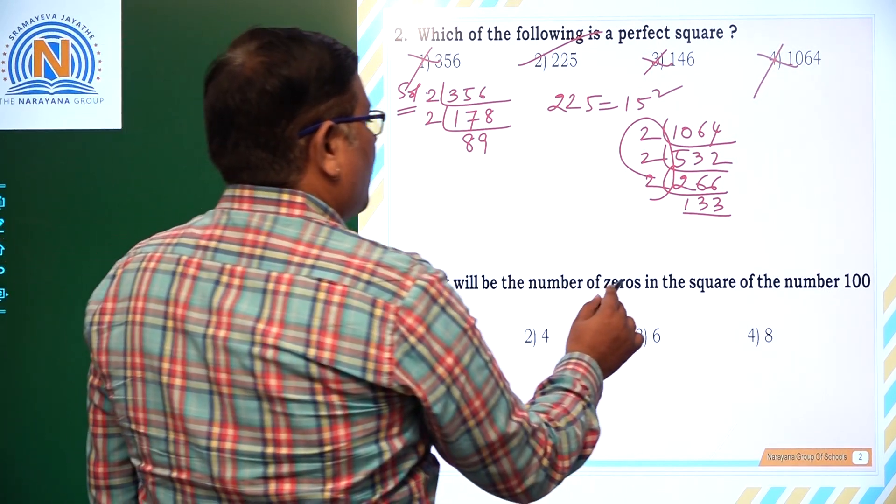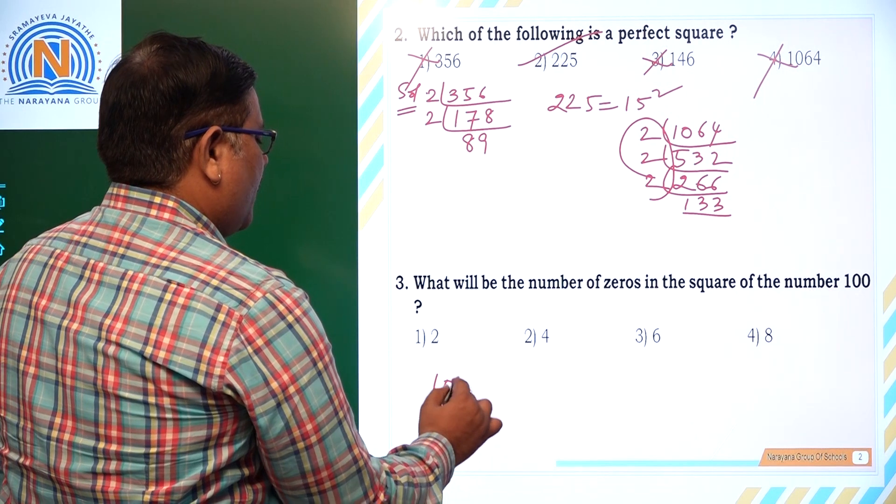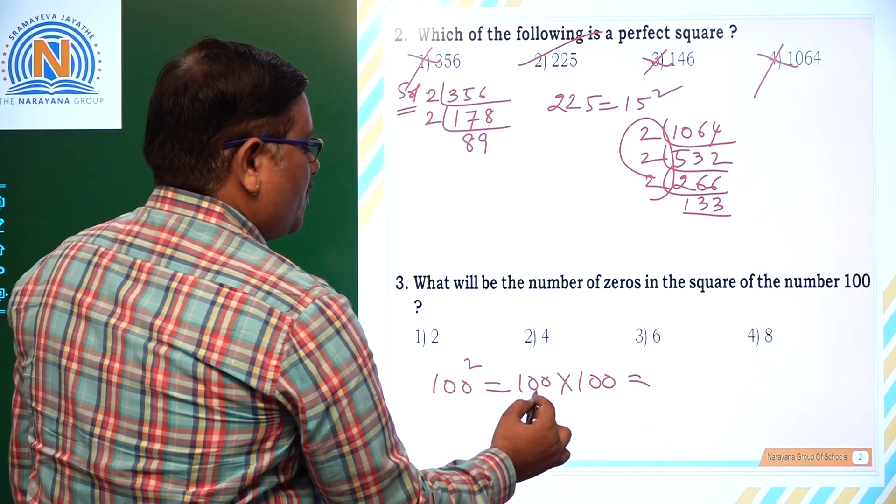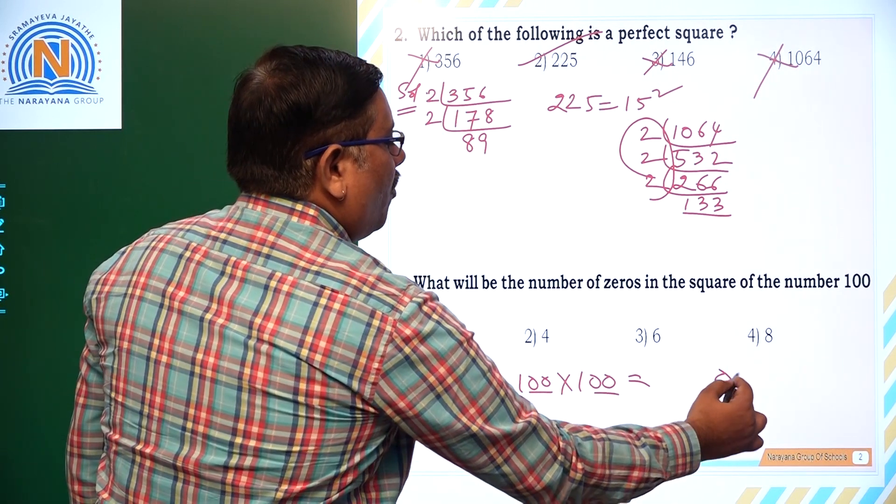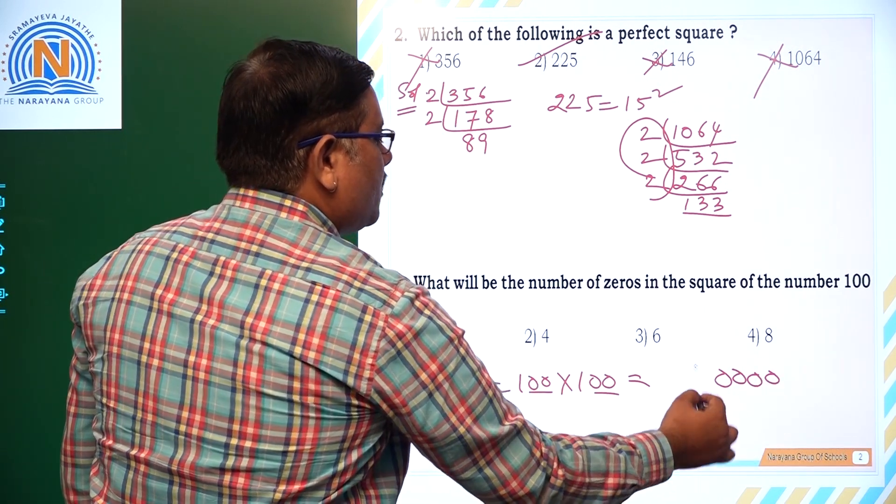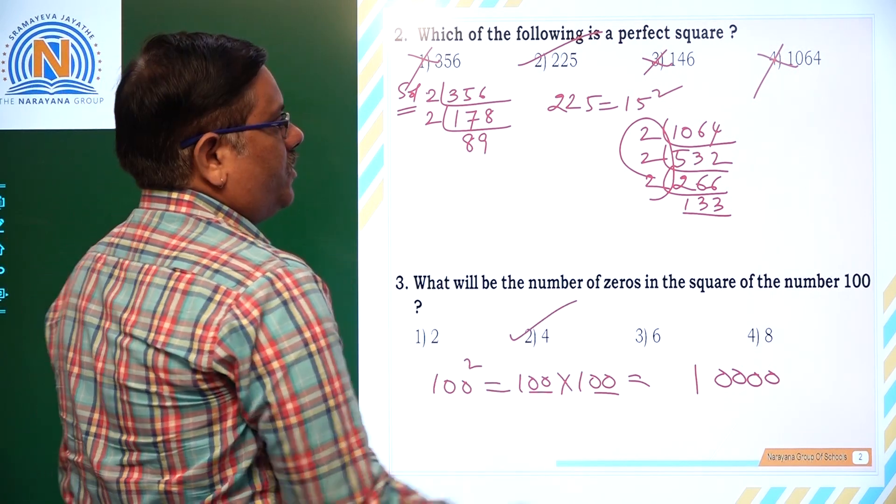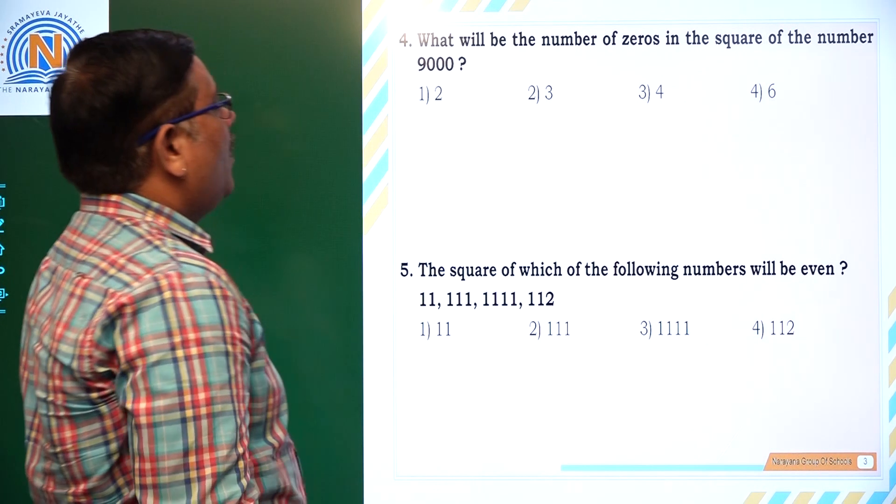What will be the number of zeros in the square of 100? If you take 100 squared, that is 100 into 100. So number of zeros will be 2 plus 2, how many? 4. Of course, here also we get only 1 into 1 is 1. So the answer for this question is 4 zeros, second option.